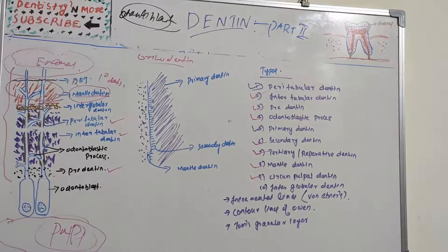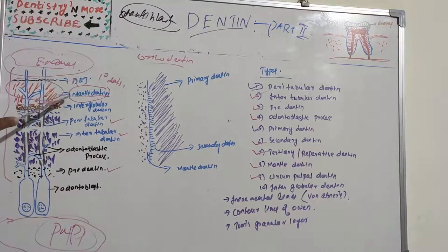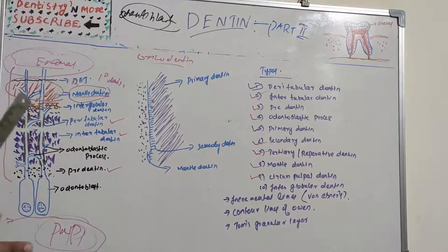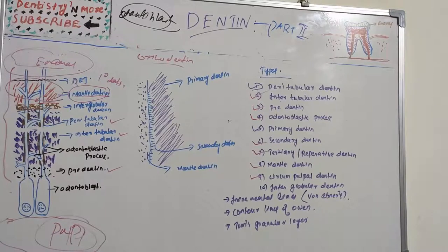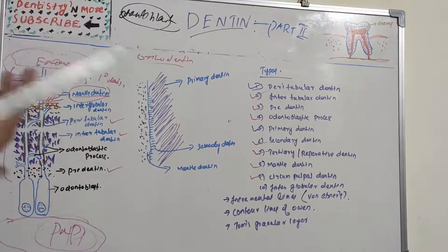Mantle dentine is the first layer of primary dentine to be deposited — it is the oldest dentine — produced adjacent to the enamel organ. It can be recognized by its characteristic thick fan-shaped collagen fibers that run perpendicular to the DEJ. Circumpulpal dentine is formed after the mantle dentine layer and constitutes the major part of primary and secondary dentine. Hydroxyapatite crystals are deposited on the surface and within fibrils, growing as mineralization proceeds, resulting in increased mineral content.